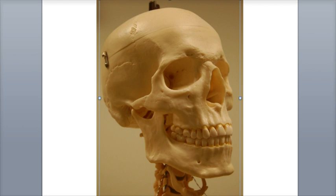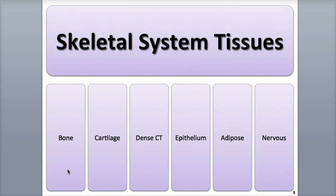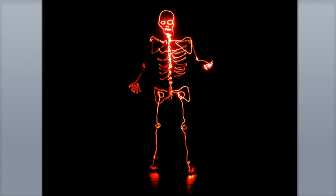One aspect of the skeletal system that people don't often consider is the fact that every bone in the body, no matter how large or small, is an organ. Organs are structures made of two or more different tissues carrying out specific functions. Each bone consists of a variety of different tissues, all working to carry out a range of functions. These tissues include bone — also known as osseous tissue — cartilage, dense connective tissues, epithelial tissues, adipose tissues, and nervous tissues. Although bone is hardened and heavily mineralized, it is very much an active, living, breathing organ.